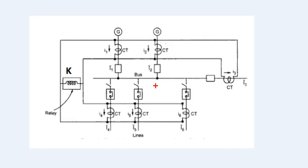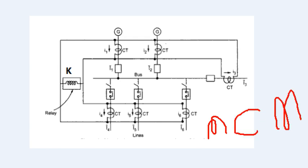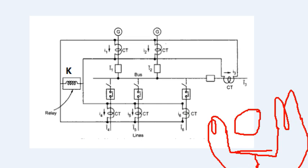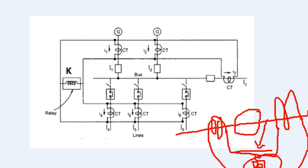First, we will understand differential protection. There are two CTs — one CT on each side. There is an incoming current and an outgoing current. This is the relay operating scheme. If there is a fault, the current will vary and the relay will operate. This is the principle.